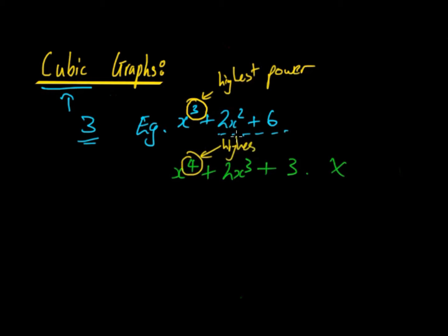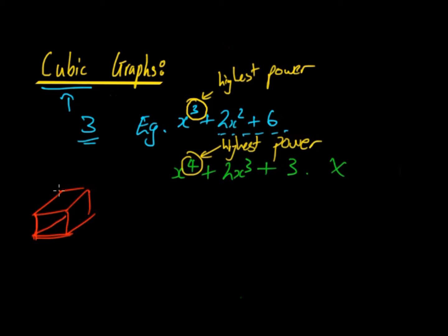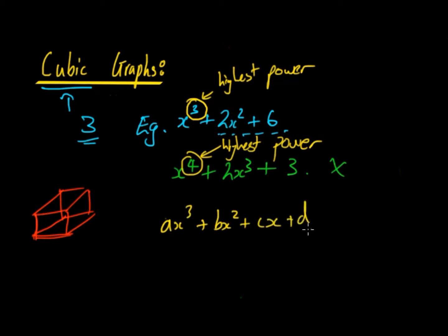The reason why it's 3 is you can remember: cubic relates to a cube, which has three dimensions — length, width, and depth. So hence why it's 3. In a general sense, a cubic function has the general form ax³ plus bx² plus cx plus d, where you can have a constant and each of those terms.